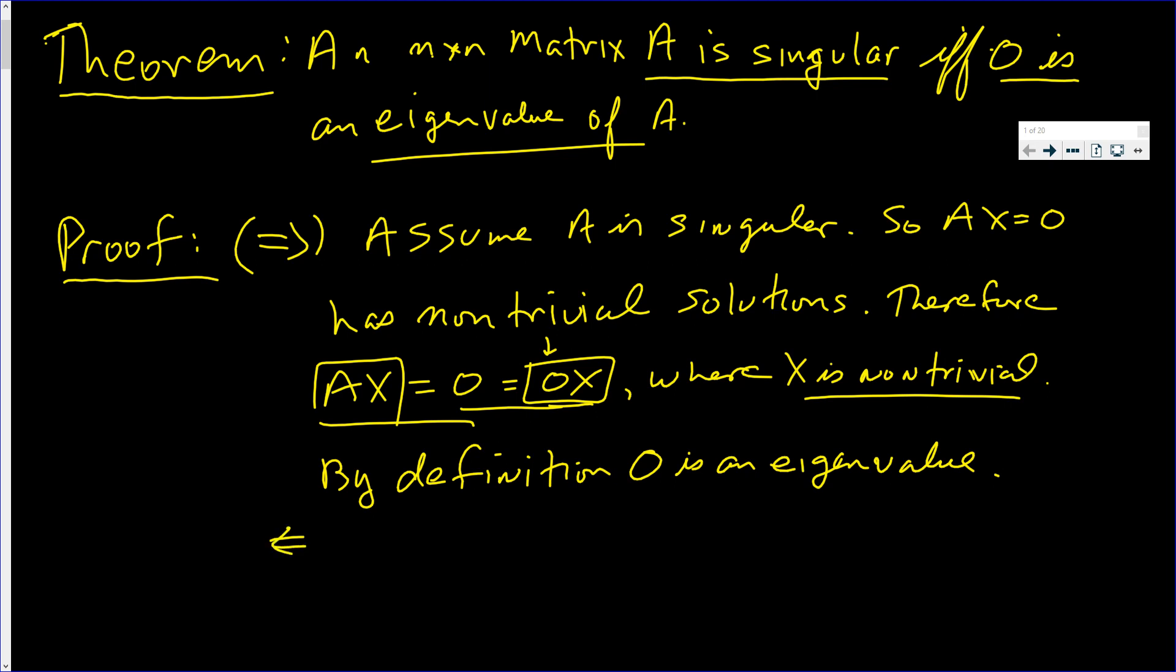Now let's go the other way. Let's assume that 0 is an eigenvalue of A. Assume 0 is an eigenvalue of A.